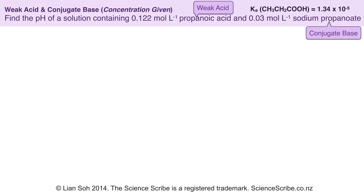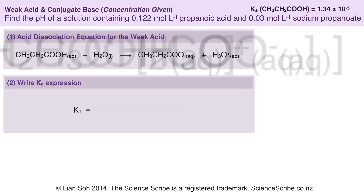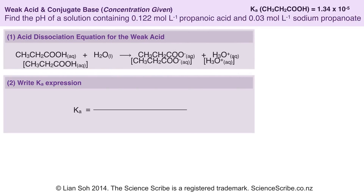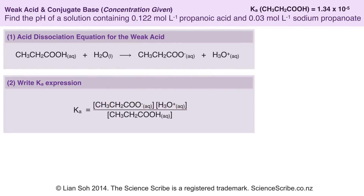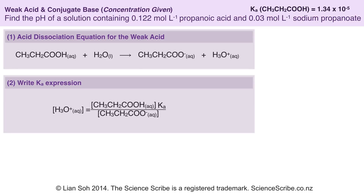Notice in the top right hand corner the question has also given you a value for Ka. The strategy to solving this type of question is to pick your weak acid, which is your propanoic acid, and write the acid dissociation equation for it with water. After that we're going to write the Ka expression — reactants at the bottom, products along the top — and then rearrange that to make hydronium ions the subject.